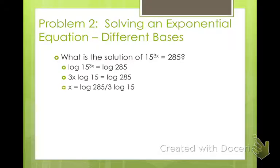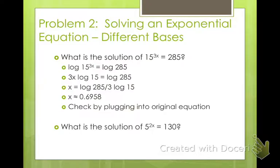And then you can go ahead and divide both sides by anything that's not your variable. So 3 log 15. I'm going to divide that by both sides. And now all we have to do is plug that into our calculator because we don't have a nice answer for that one. So once you plug that into your calculator, you should get x is about 0.6958. And then you can check by plugging it in.